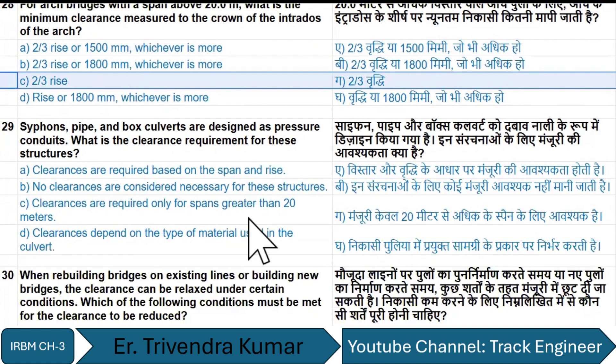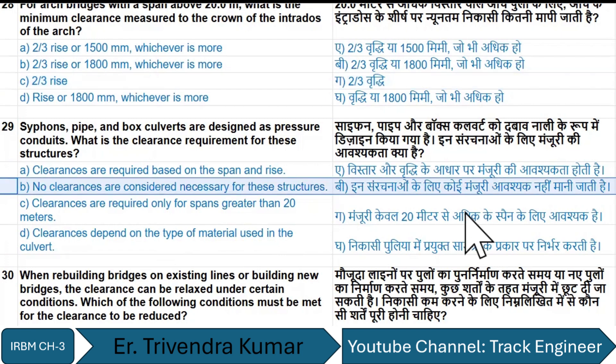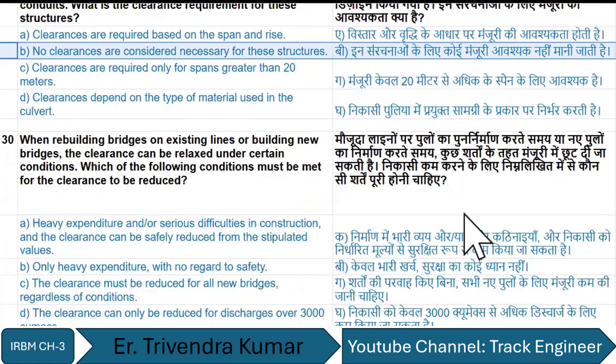Siphons, pipes, and box culverts are designed as pressure conduits. No clearance is considered necessary for these structures — option B is the right answer.